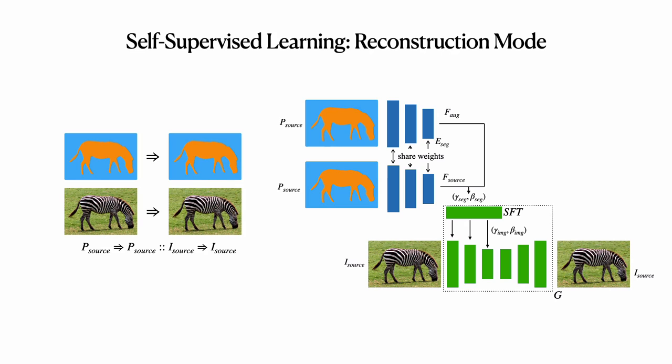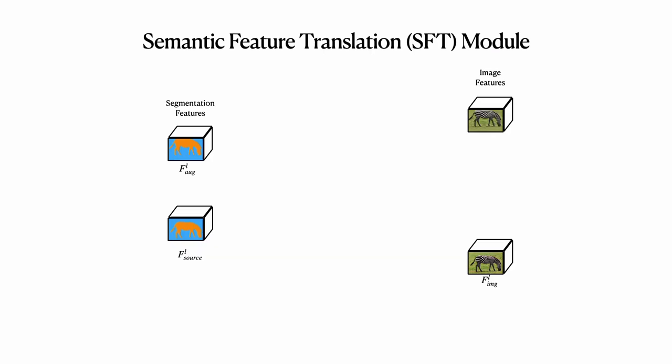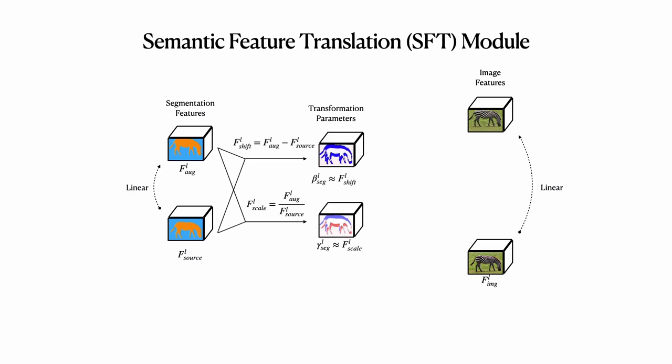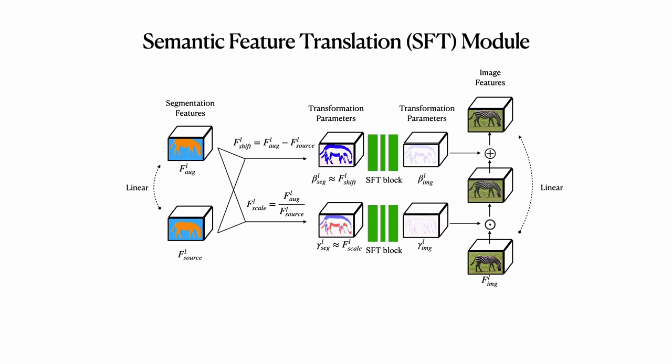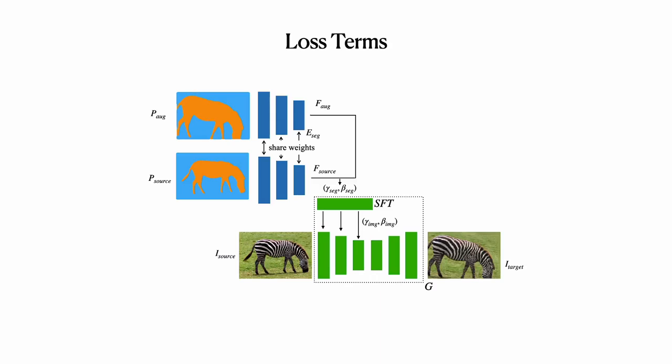Next, we describe the process of feature translation between the segmentation domain and the image domain with the SFT module. We assume the transformations in both the segmentation domain and the image domain are linear at the feature level. Thus, after extracting features F-source and F-AG from segmentation maps P-source and P-AG, we perform element-wise division and difference on the feature tensors to approximate the transformation parameters in the segmentation domain. Then gamma-image and beta-image are learned with two SFT blocks respectively, and we apply an affine transformation on the source image features to obtain the transformed image features.